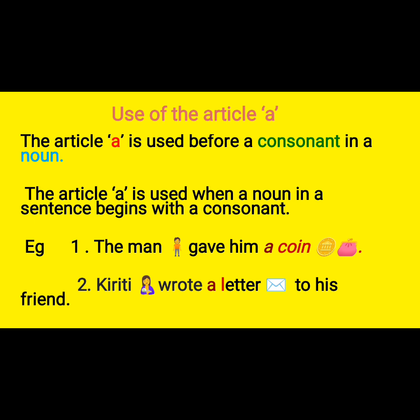The article a is used before a consonant in a noun — that is, when a noun in a sentence begins with a consonant. For example: the man gave him a coin. Here you can see an image of a man. The man gave him a coin — the letter C is a consonant, and so the article a is used before it.